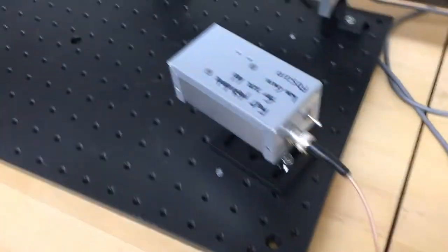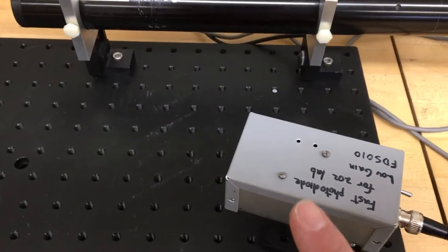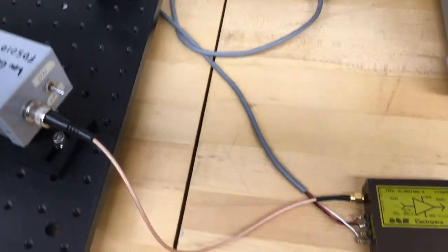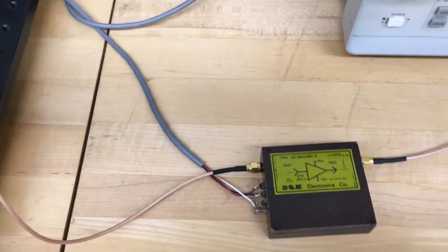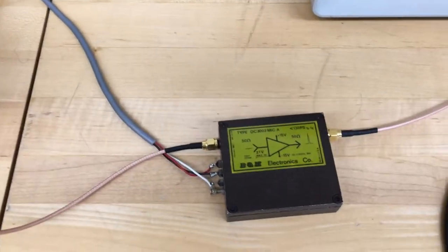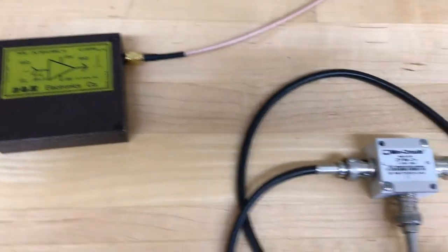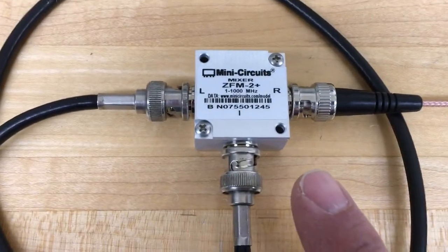To get a photodiode that has a fast enough response time to pick up a hundreds of megahertz signal, you actually have to use a very small photodiode. It's not very sensitive, but it will respond quickly to the signal. So we run it through an amplifier, and then we run it into what's called a mixer.